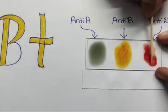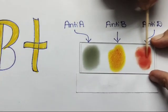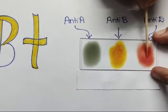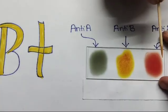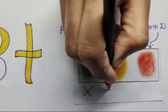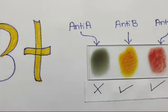Clotting is also seen in anti-D, which means Rh antigen is also present. It is a positive blood group. Hence, the overall blood group is B positive.